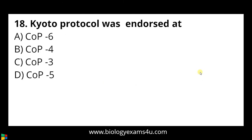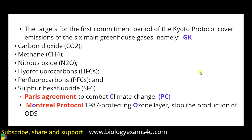Question number eighteen: the Kyoto Protocol was introduced at — a) COP6, b) COP4, c) COP3, d) COP5. The answer is COP3, which was held in Kyoto, Japan. The Kyoto Protocol covers emissions of 6 main greenhouse gases including carbon dioxide, methane, nitrous oxides, HFCs, PFCs, and sulfur hexafluoride. You can remember it as GK — K for Kyoto Protocol, G for greenhouse gases.